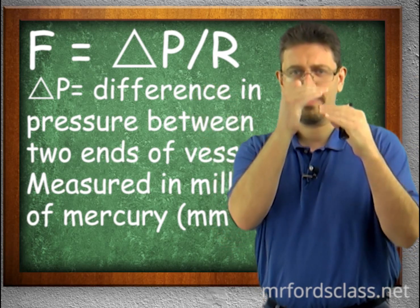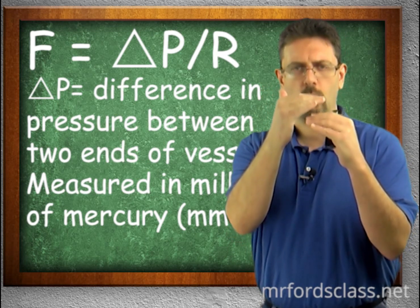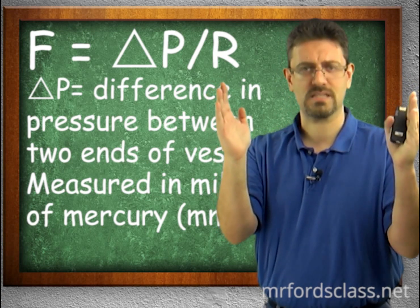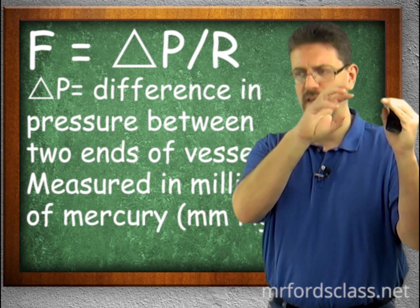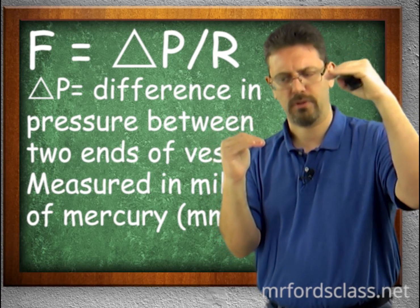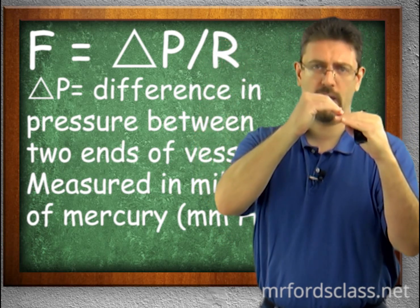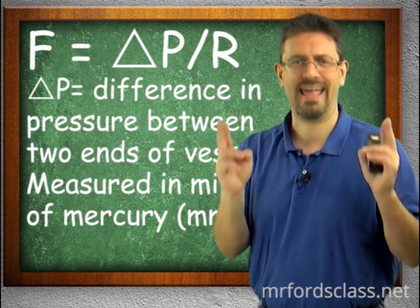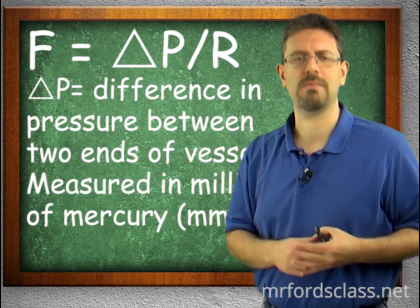Think of a garden hose. We're not talking about the pressure inside the hose, but the pressure at one end versus the other end. If there's no difference between one end and the other, there's no flow. If we have high pressure at one end and low pressure at the other, the blood flows in that direction. Delta P is the difference in pressure at the ends of those vessels, measured in millimeters of mercury.